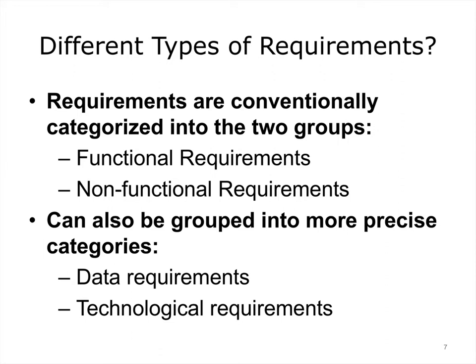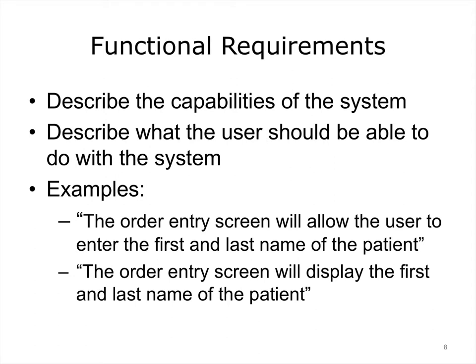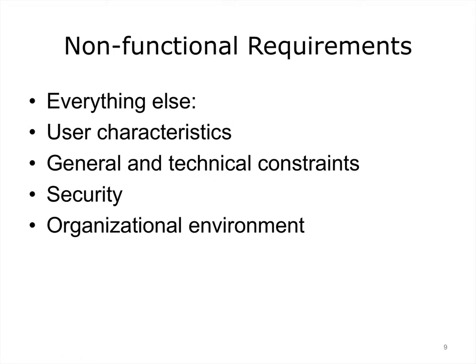Requirements are conventionally categorized into two groups: functional requirements and non-functional requirements, though they can also be categorized into more precise bins. Functional requirements describe the capabilities of the system and specify what the user should be able to do — for example, the order entry screen of a computer-based order entry system will allow the user to enter the first and last name of the patient and display that name. Non-functional requirements include everything else, such as user characteristics, the nature of the organization, and the need for security.